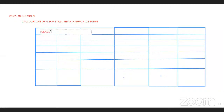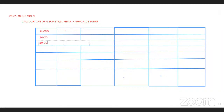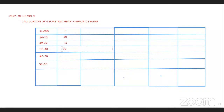The class intervals are: 10 to 20, 20 to 30, 30 to 40, 40 to 50, and 50 to 60. The frequencies are: 30 people, 75 people, 70 people, 60 people.